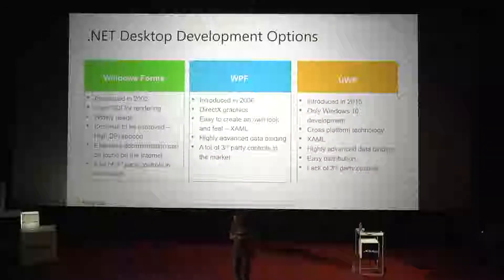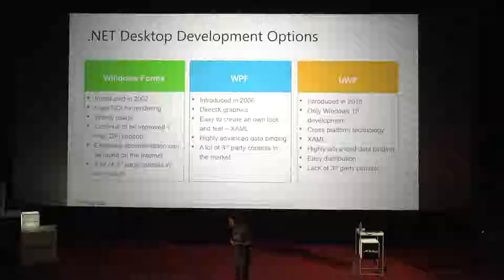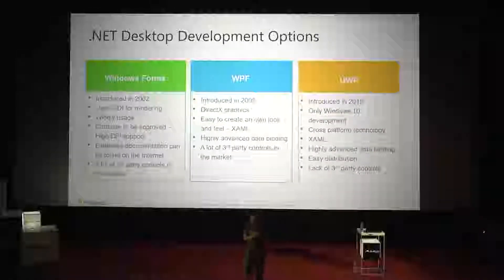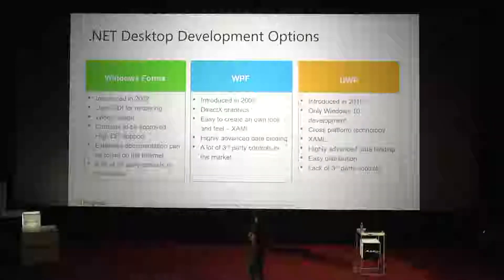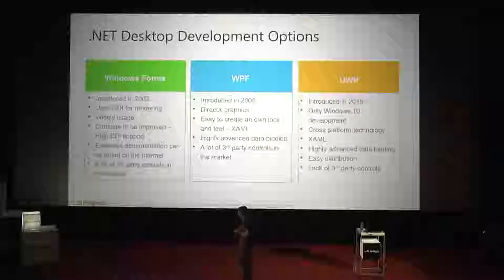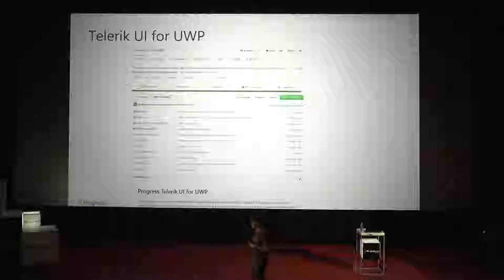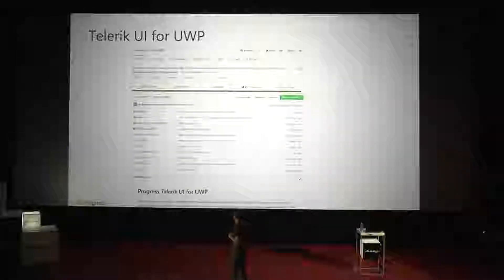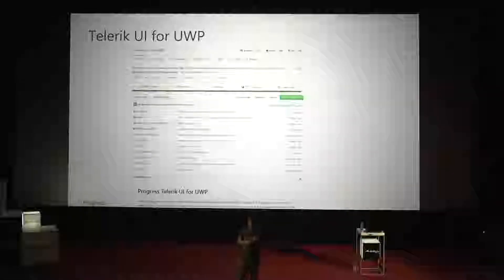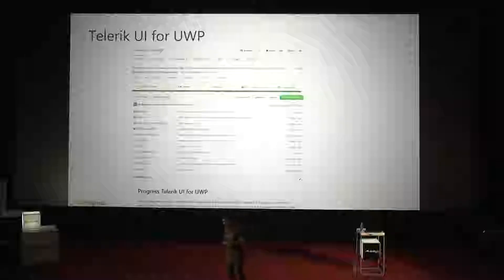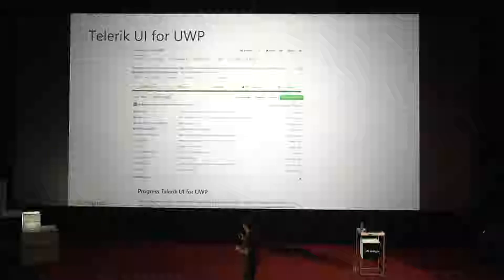UWP is only developed on machines that have Windows 10 installed, and like WPF, it also has support for XAML and highly advanced data bindings. One minus for UWP is the lack of third-party controls. However, two years ago, Telerik open-sourced all its UWP controls. The source code can be found on GitHub — simply search for 'UI for UWP' to find the repository. There's a NuGet package with controls like data grid, data form, charts, gauges, and many more.